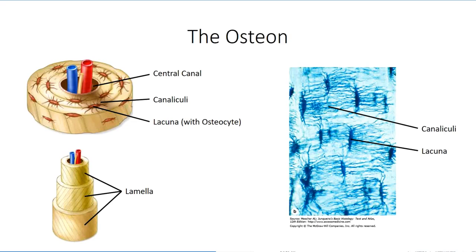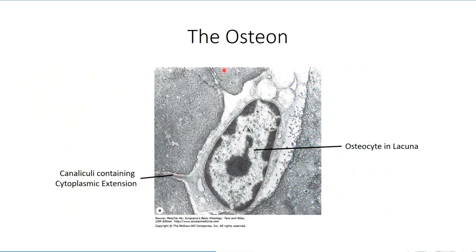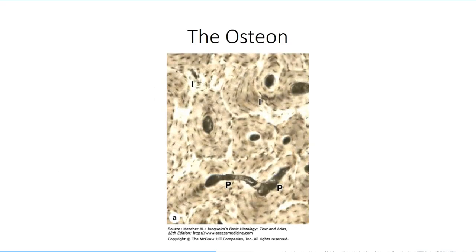The hollow central core of the osteon is referred to as the central canal. It contains a neurovascular bundle that courses along the length of the osteon column, providing nutrients to the inner lamellae of the osteon. These nutrients pass through the canaliculi to reach cells in more peripheral lamellae. In addition to the central canals, we also see large perforating or Volkmann canals that span from one osteon to another, interconnecting the central canals. This allows branches from the main neurovascular supply to project out to all osteons found within the bone tissue.